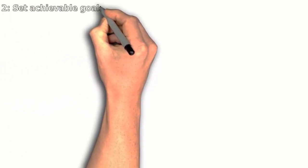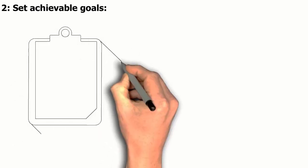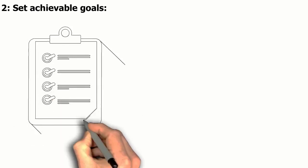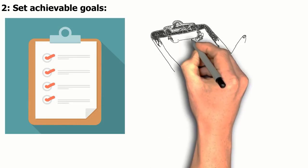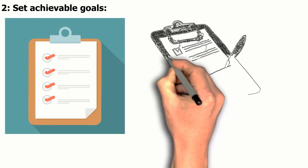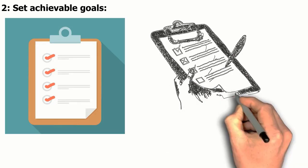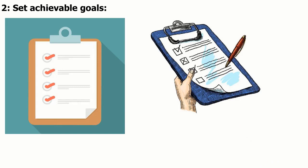2. Set achievable goals. Accomplishments and successes, no matter how small, can contribute to a positive self-image. Setting achievable goals can help you to feel more in control of your life and to experience a sense of accomplishment and progress. It is important to choose goals that are realistic and achievable, rather than setting yourself up for disappointment. Celebrate your progress and accomplishments along the way, and take pride in your achievements.